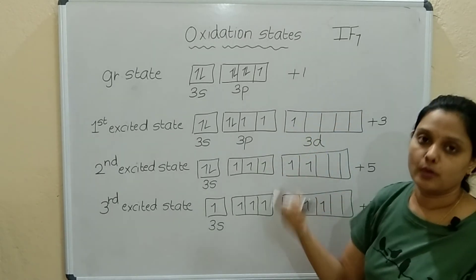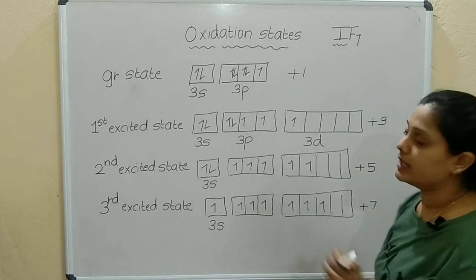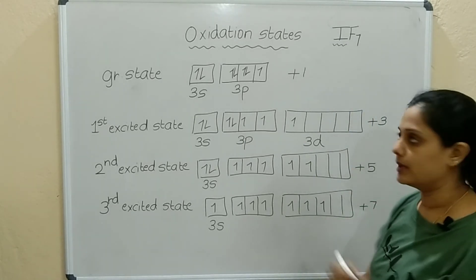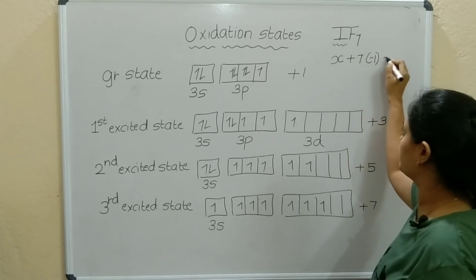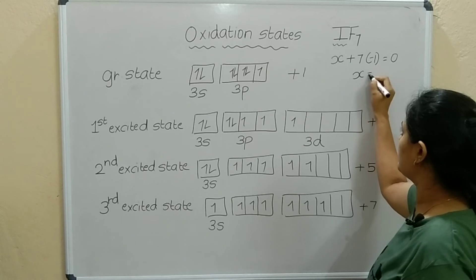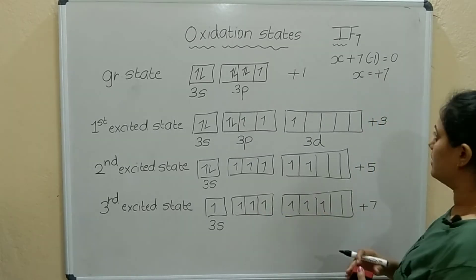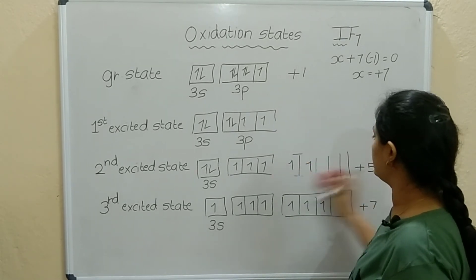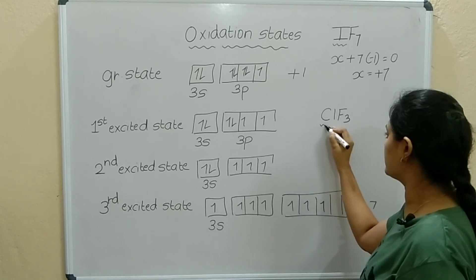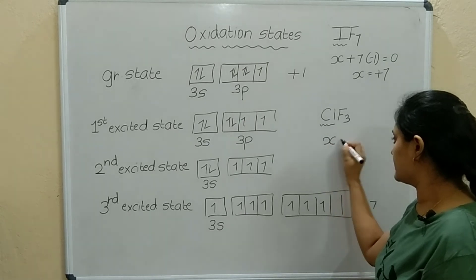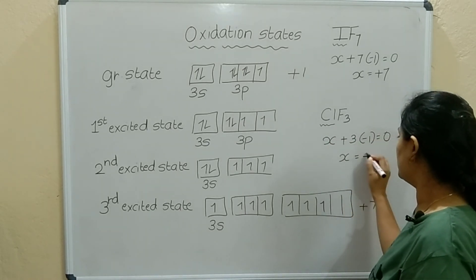For example, in Iodine Heptafluoride (IF₇), calculating the oxidation state of Iodine: X + 7×(−1) = 0, so X equals plus 7. Another example: for ClF₃, the oxidation state of Cl is X + 3×(−1) = 0, so X equals plus 3.